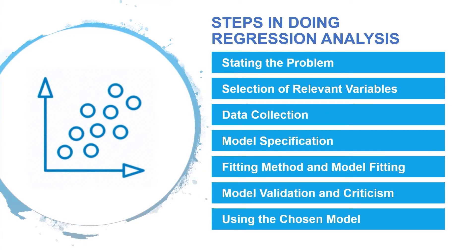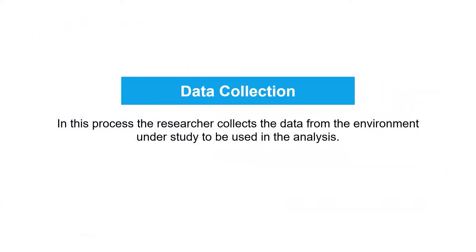The third step is data collection. In this process, the researcher collects the data from the environment under study to be used in the analysis. Sometimes the data are collected in a controlled setting so that factors that are not of primary interest can be held constant. More often, however, the data are collected under non-experimental conditions where very little can be controlled by the researcher. In either case, the collected data consists of measurements for each of the potentially relevant variables.